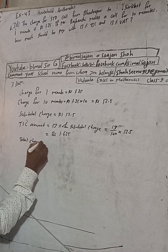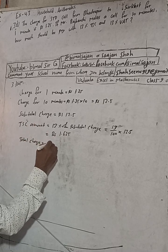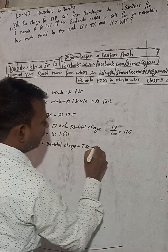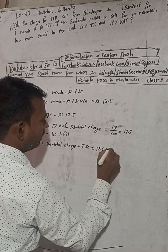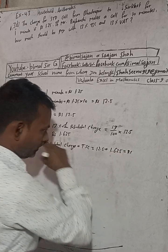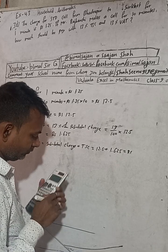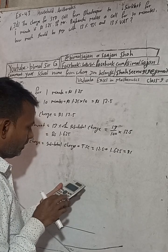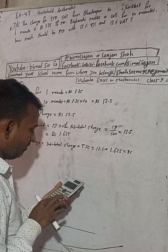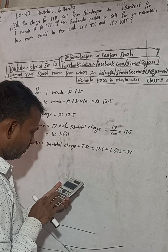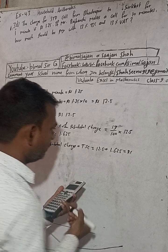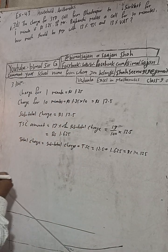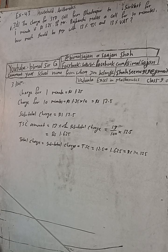Total charge is equal to subtotal charge plus TSC. Subtotal charge is 12.5 plus TSC is 1.625. So 12.5 plus 1.625 gives us Rs 14.125. This is the total charge.